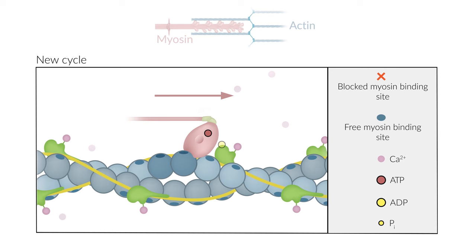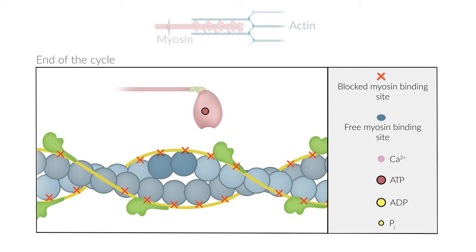If the calcium concentration in the muscle cell remains high, the cross-bridge cycle starts again. If the calcium concentration decreases, the myosin binding site is once again blocked by tropomyosin and the cross-bridge cycle ends.